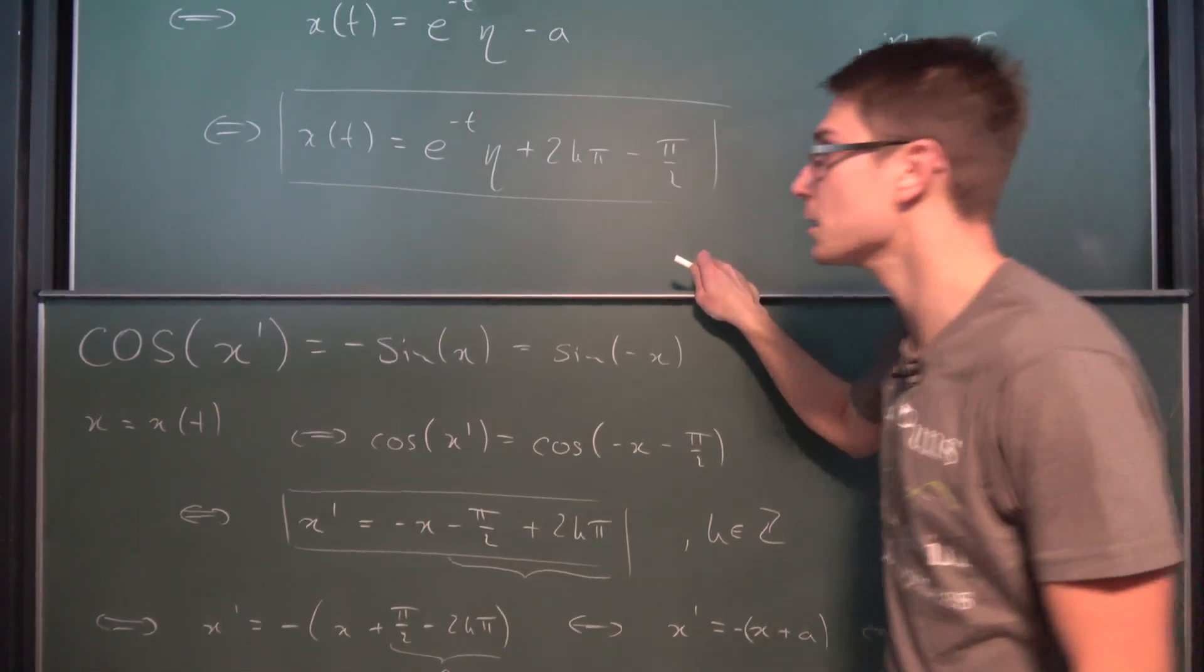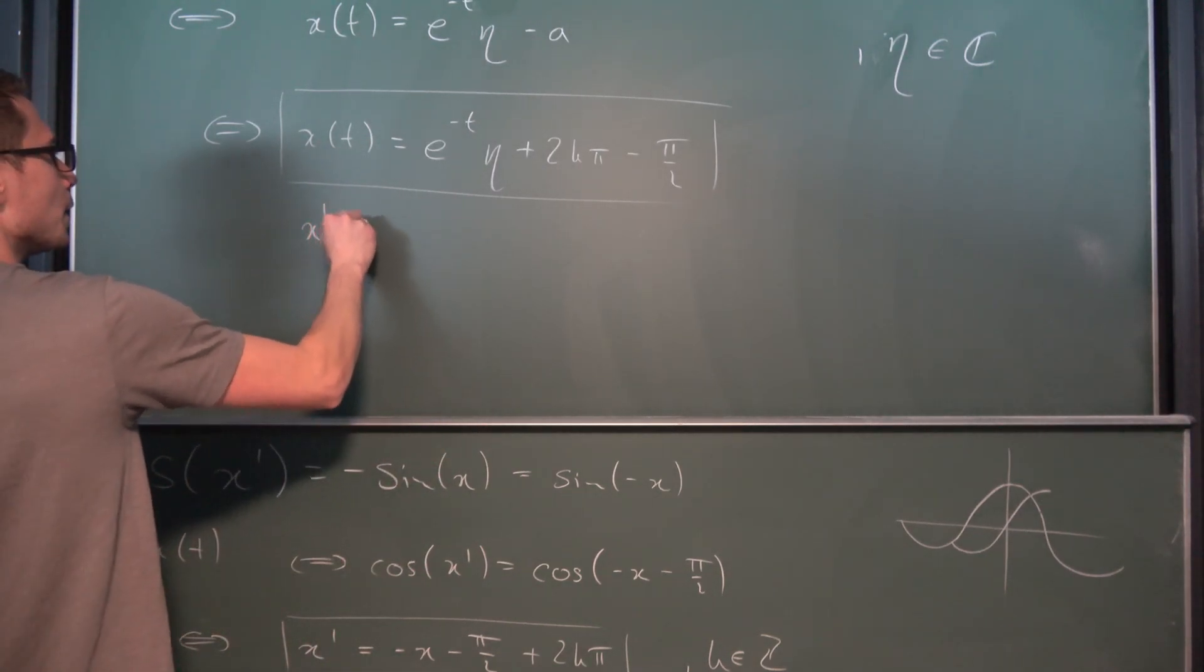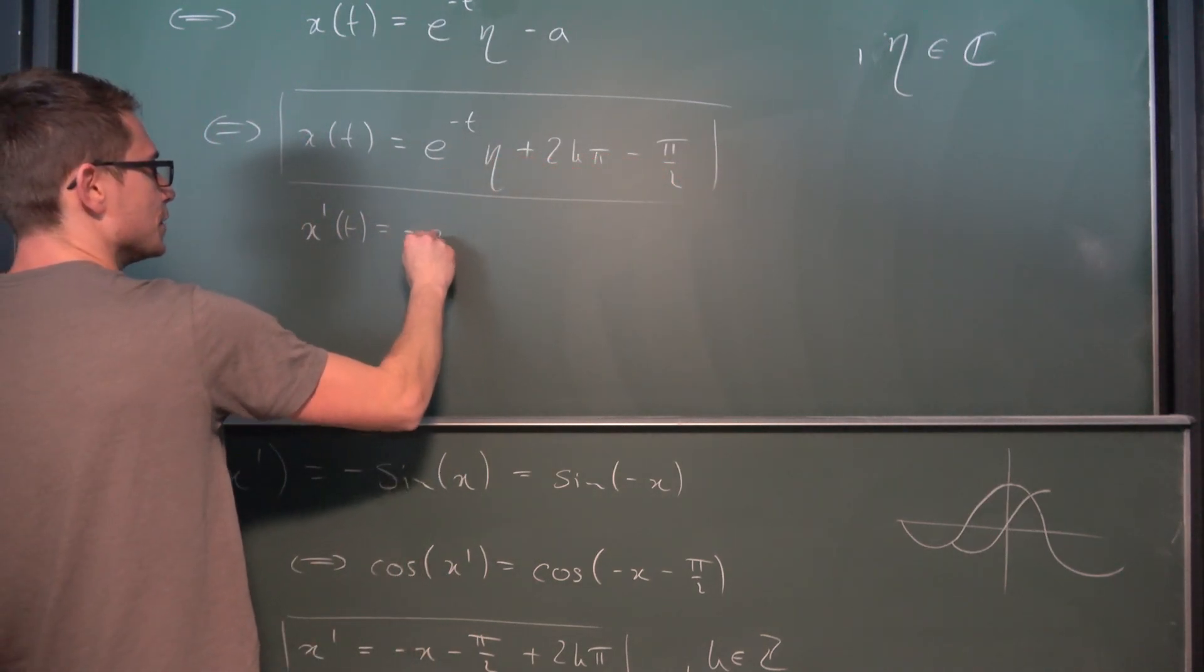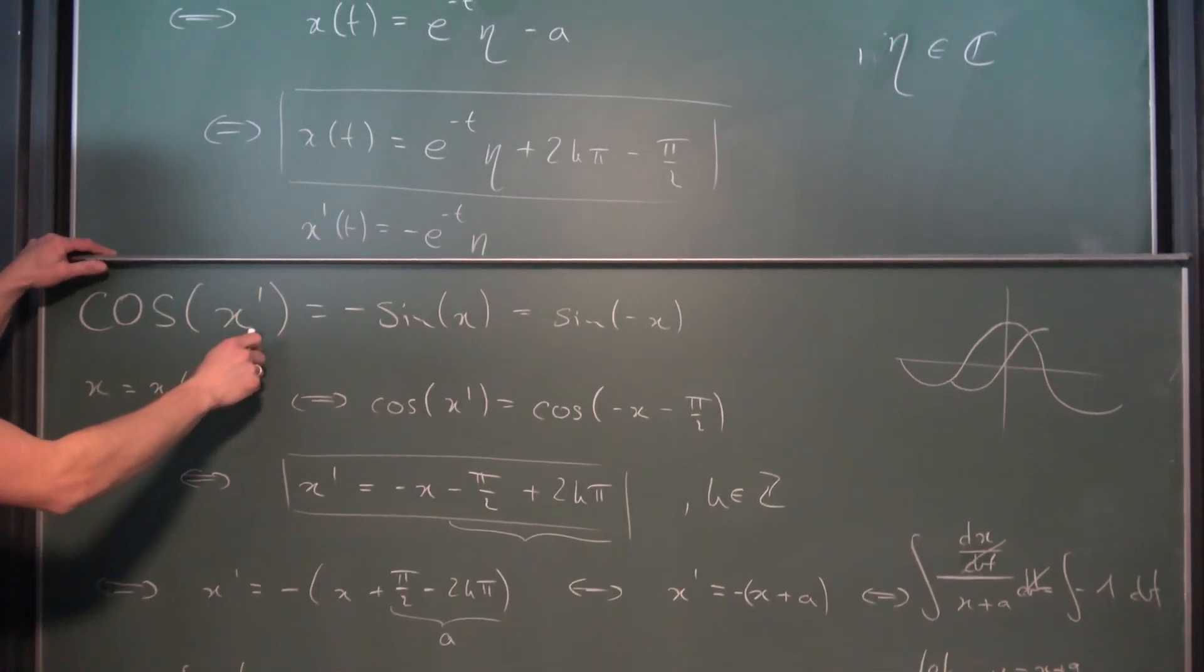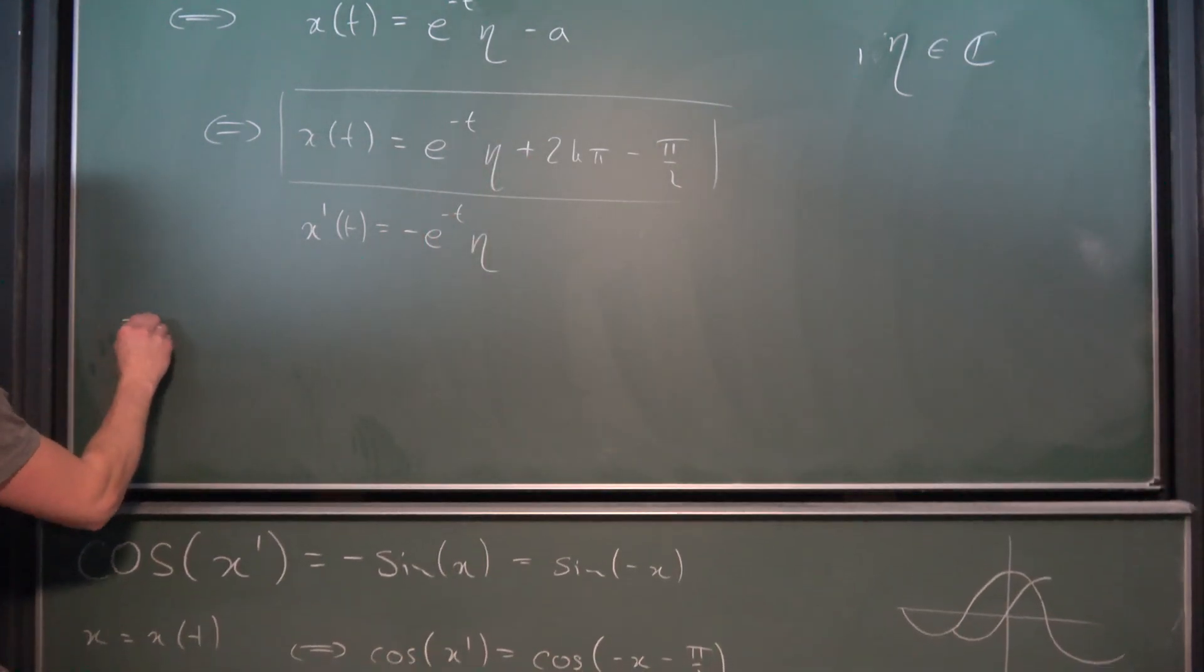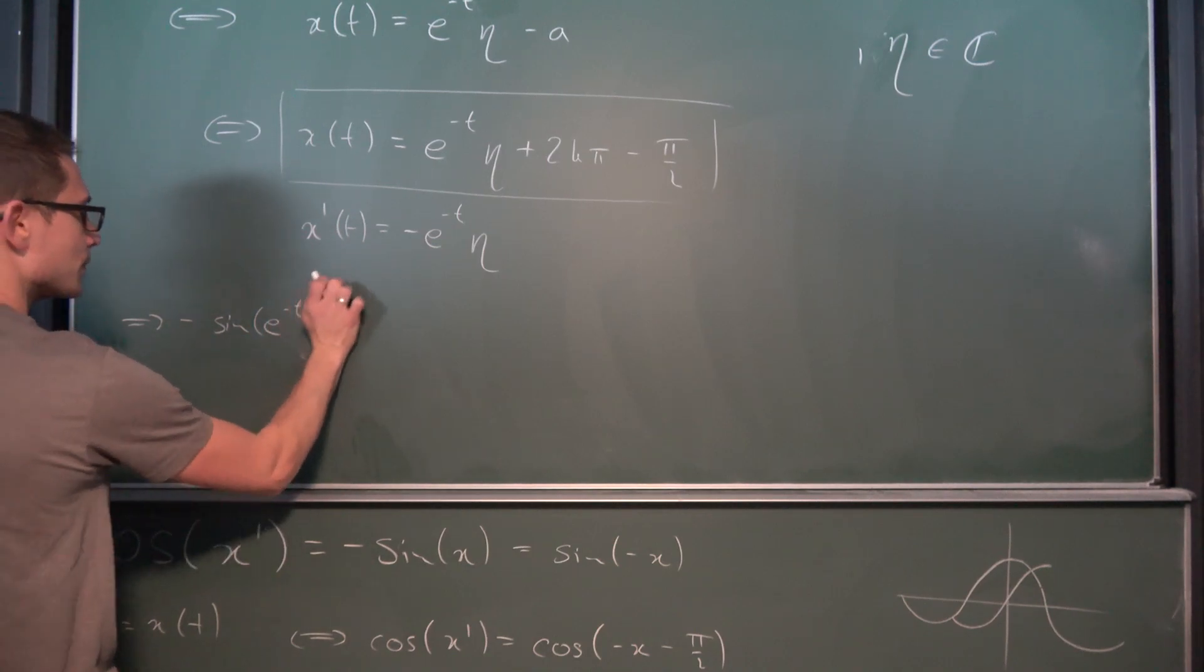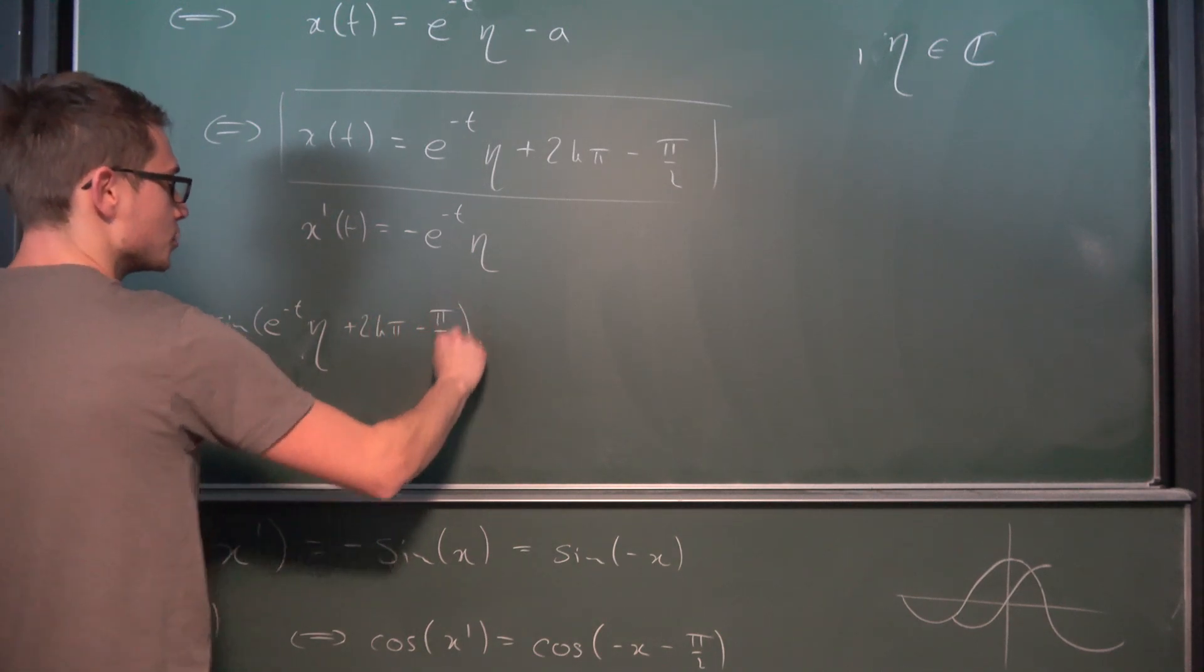And we can actually see if what we have done is right. So if we were to differentiate this then x prime of t is equal to okay this part is going to vanish. It's going to die somewhere in Mexico. So we are just going to end up with e to the negative t times eta. So what we want to show is that the cosine of x prime is equal to negative the sine of our original function x. So let us plug everything in. Negative the sine of the original function x e to the negative t times eta plus 2k pi minus pi over 2.